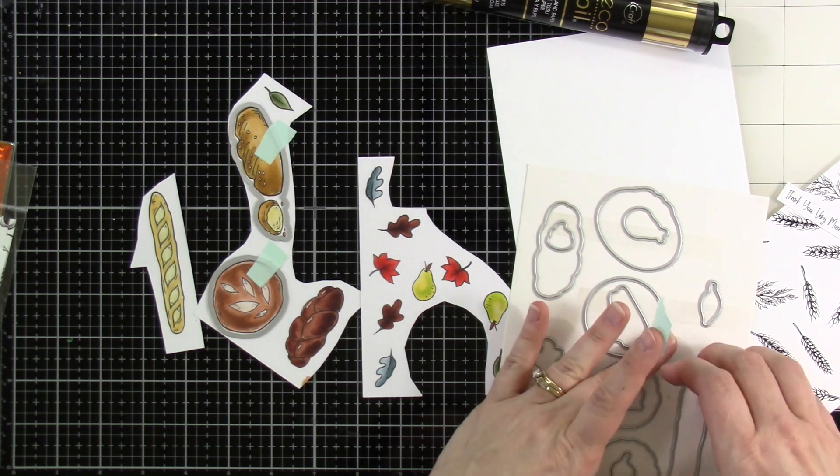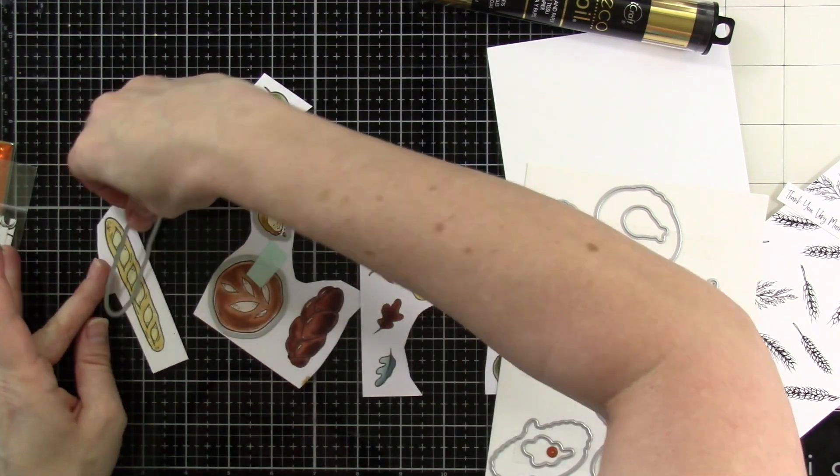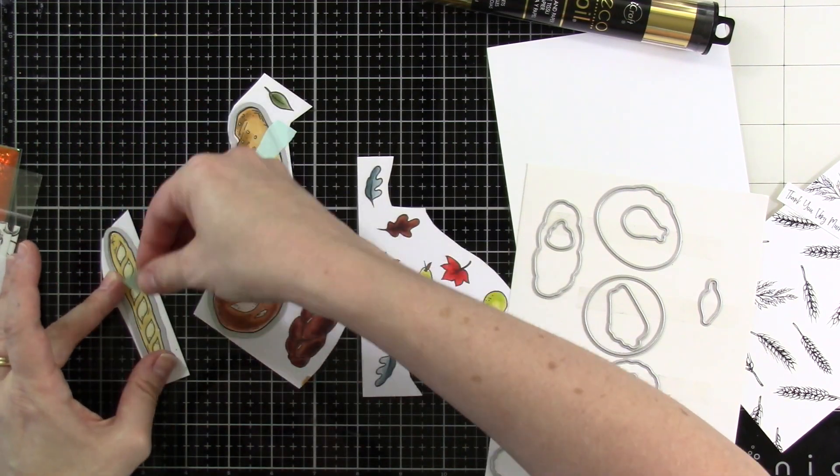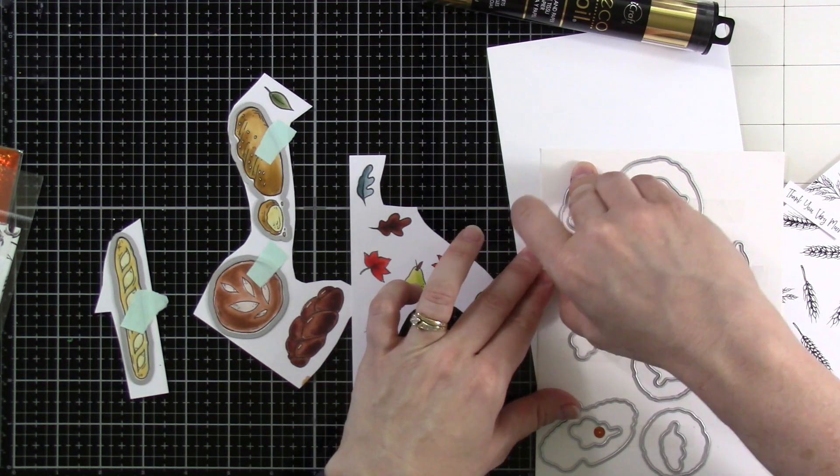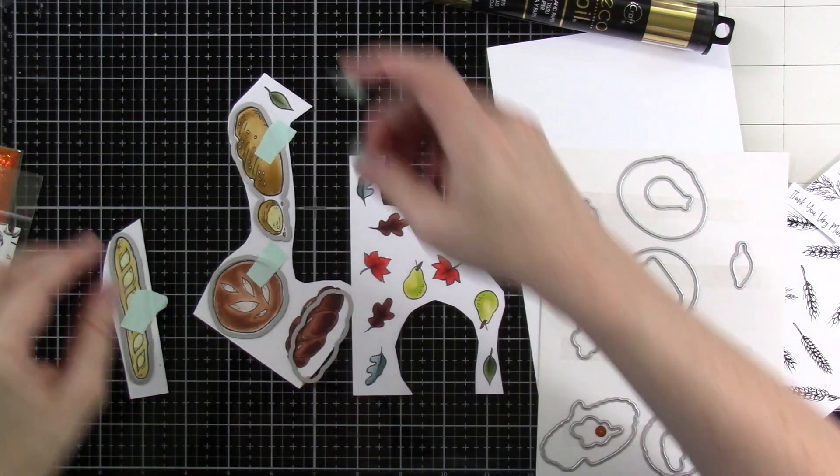So we're going to tack down all of the matching dies that go with the images that I have. I went ahead and colored these using my Ollo markers and stamped those out onto some Express It cardstock, all alcohol marker friendly.